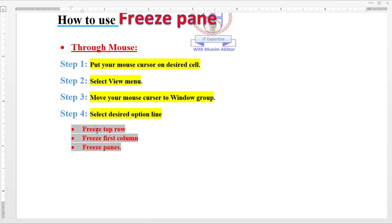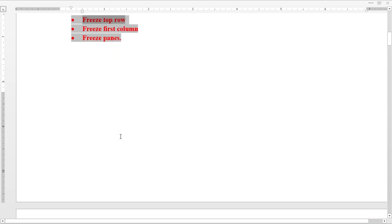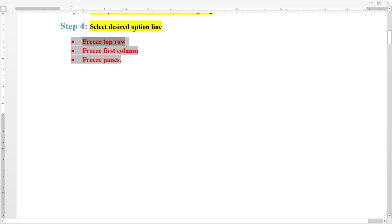You have to utilize the first option, suppose Freeze Panes or Freeze Top Row, then when you scroll down, just like I scroll down, the first row stays visible.